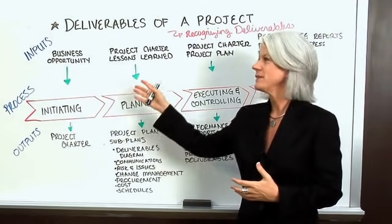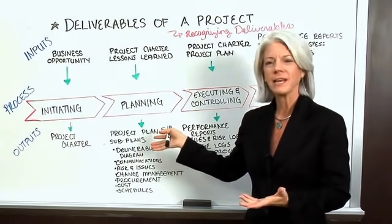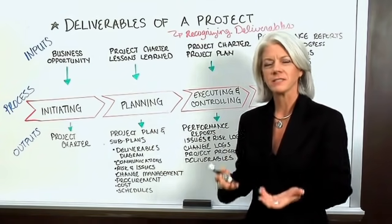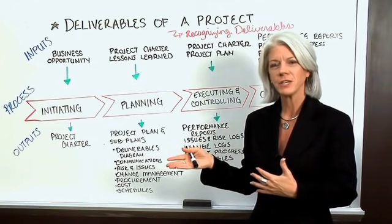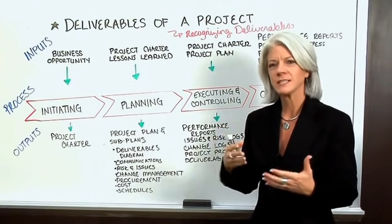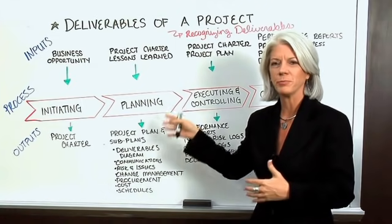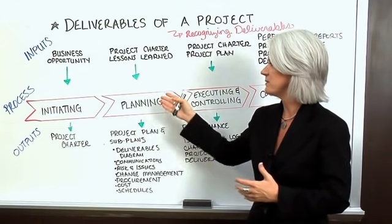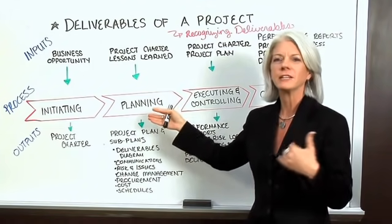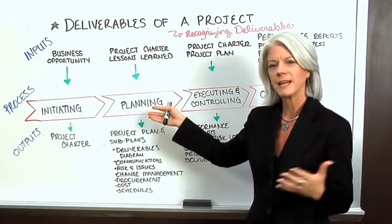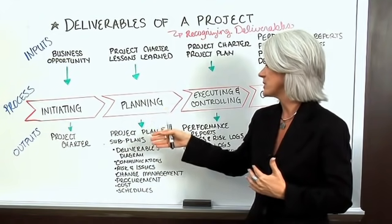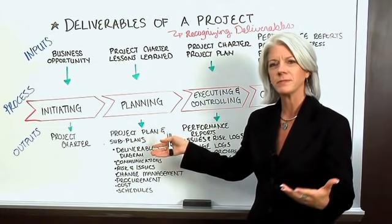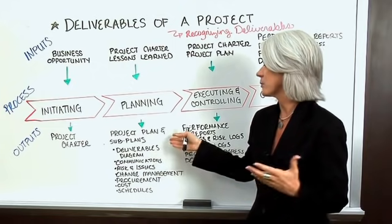Then the project charter feeds into the next phase — the planning phase. The project charter and the lessons learned feed into the planning process, including all the important stakeholders and people on the planning team. From there is produced the project plan, and from the project plan all the sub-plans that identify the deliverables diagram.